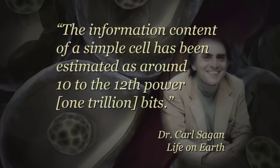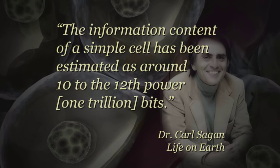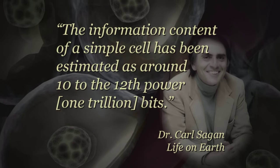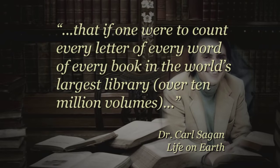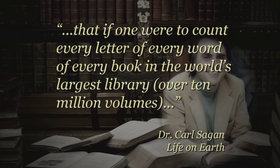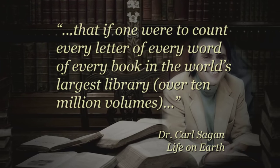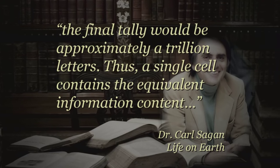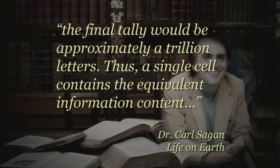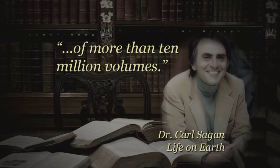The famous Dr. Carl Sagan wrote about DNA. The information content of a simple cell has been estimated as around 10 to the 12th power, or 1 trillion bits. He put this number into perspective. That if one were to count every letter of every word of every book in the world's largest library over 10 million volumes, the final tally would be approximately a trillion letters. Thus, a single cell contains the equivalent information content of more than 10 million volumes.